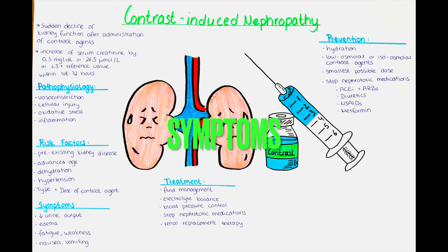What are symptoms of contrast-induced nephropathy? Symptoms can vary depending on the severity of kidney injury and the individual patient. In some cases it may be asymptomatic, especially in its early stages. When symptoms do occur, one hallmark sign is decreased urine output, which may manifest as reduced frequency of urination or a significant decrease in the volume of urine passed.